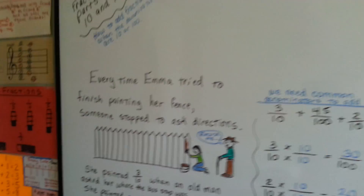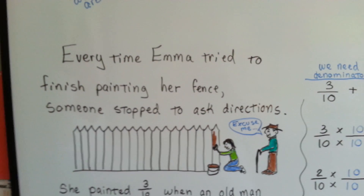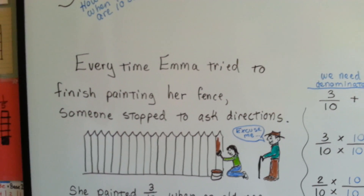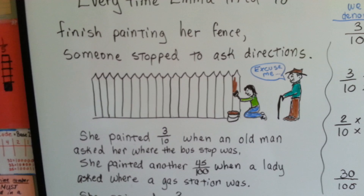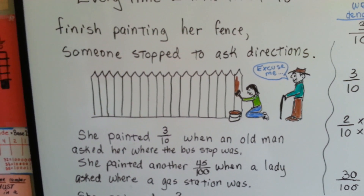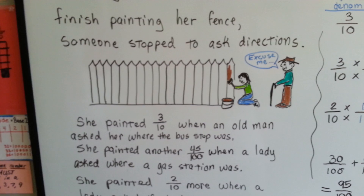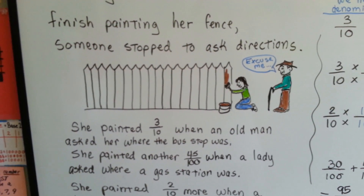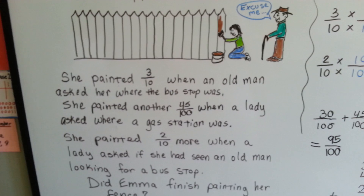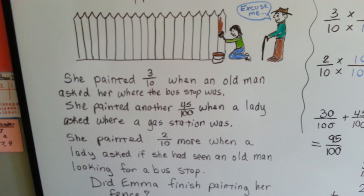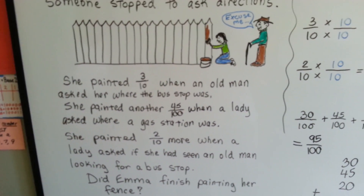So every time Emma tried to finish painting her fence, someone stopped to ask directions or to ask her a question. She painted three-tenths when an old man asked her where the bus stop was. She painted another 45 one-hundredths when a lady asked where a gas station was. She painted two-tenths more when a lady asked if she had seen an old man looking for a bus stop. Did Emma finish painting her fence?